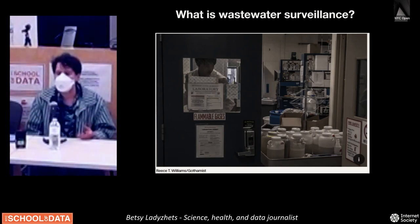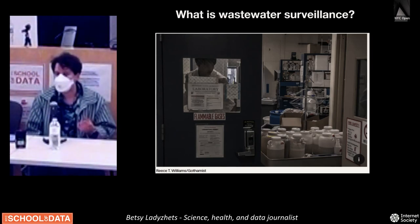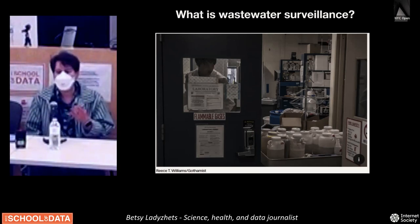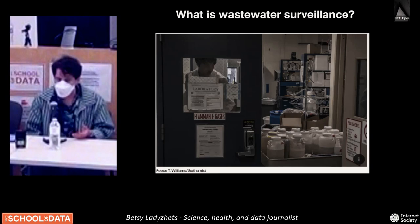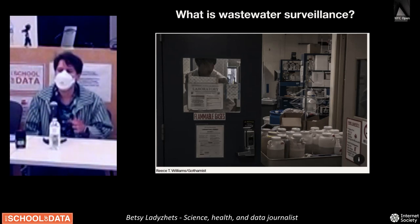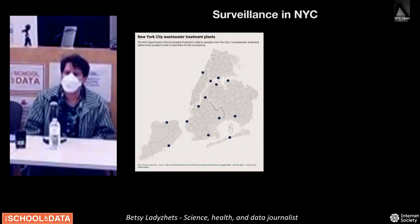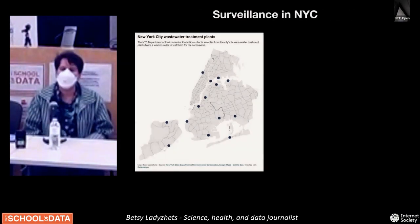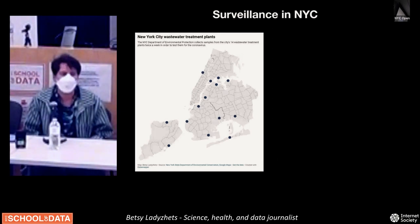In New York City, if you wanted to know the COVID levels of the city, you could either have every single person go get a PCR test, or you could only do 14 tests from the city's 14 public sewer treatment plants — which is basically what our city environmental and health departments have been doing since fairly early in the pandemic.